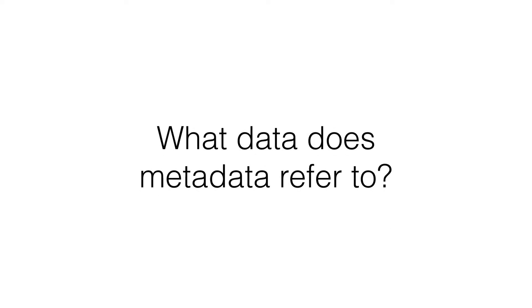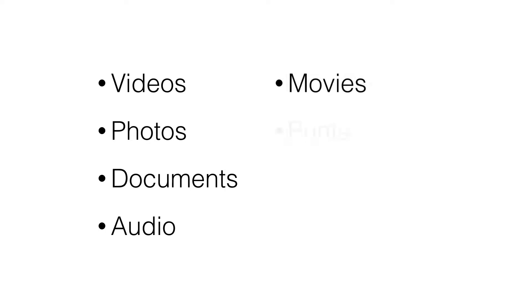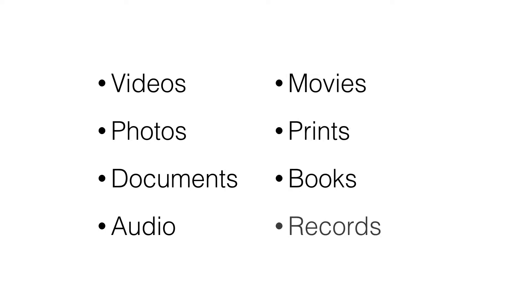So if we're talking about data about data, then it helps to understand the kind of data to which metadata refers. Broadly speaking, this data is information — any kind of information. It can be videos, photos, documents, audio, movies, art prints, books, records, anything really.